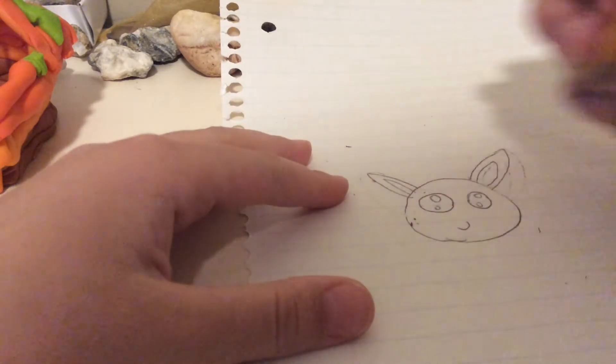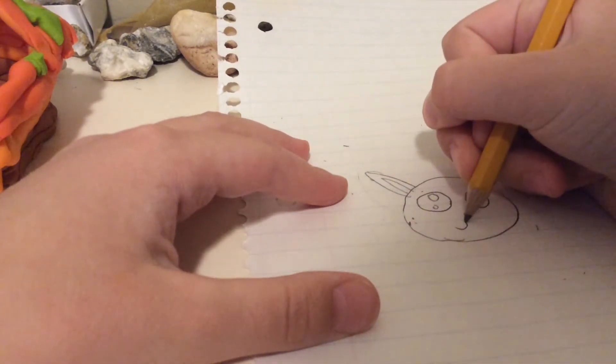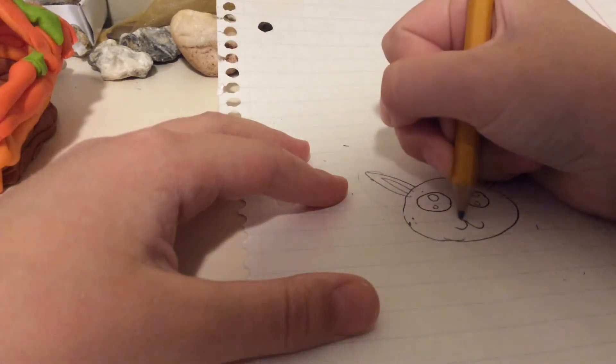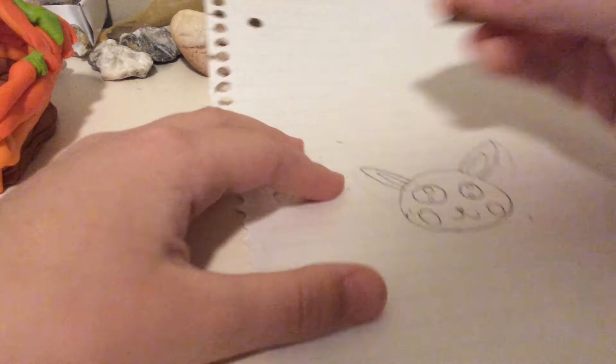And you can also go like this, do a little U going upwards, and another one, and do a little tiny nose right there for a circle, and do two circles for Pikachu's cheeks.